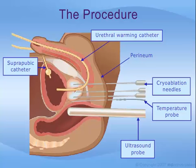Temperatures are monitored throughout the procedure with thermal sensors, and care is taken to ensure that the urethra and rectum are kept warm. This diagram also shows how the long, thin cryoablation needles, about 2 mm thick, are passed through the perineum into the prostate, again under the guidance of ultrasound.